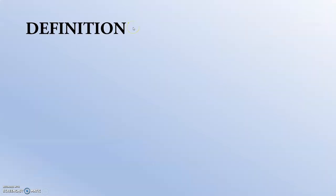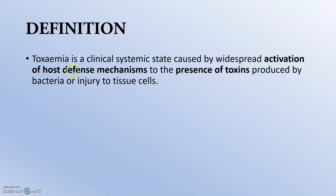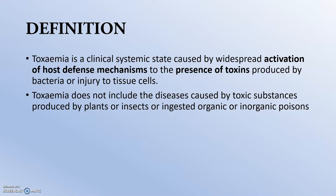Moving to the first and very important part — the definition. Toxemia is a clinical systemic state caused by widespread activation of host defense mechanisms in response to the presence of toxins produced by bacteria or any injury to tissue cells. Toxemia does not include diseases caused by toxic substances produced by plants or insects, or ingested organic or inorganic poisons.